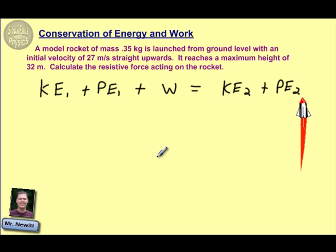And so essentially, what we're saying is the left side of my equation is kind of the ground level, if you will. The final result here, or this kinetic energy, potential energy two, is when we're at that 32 meters.